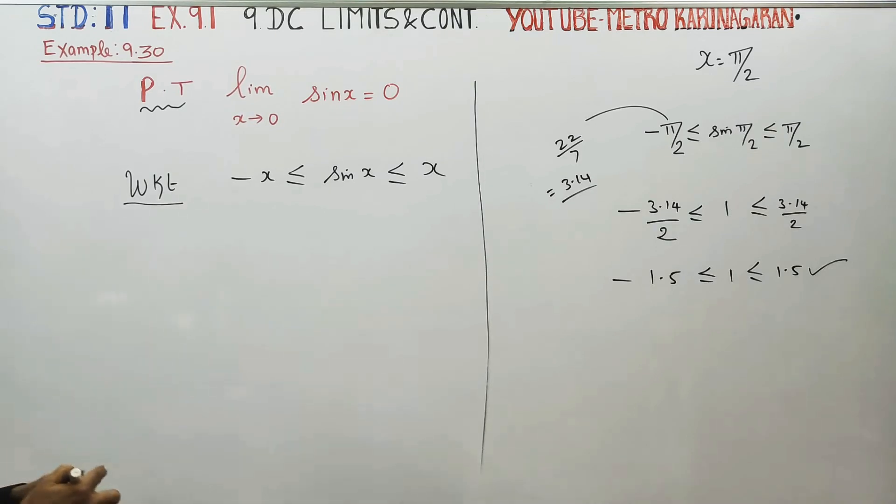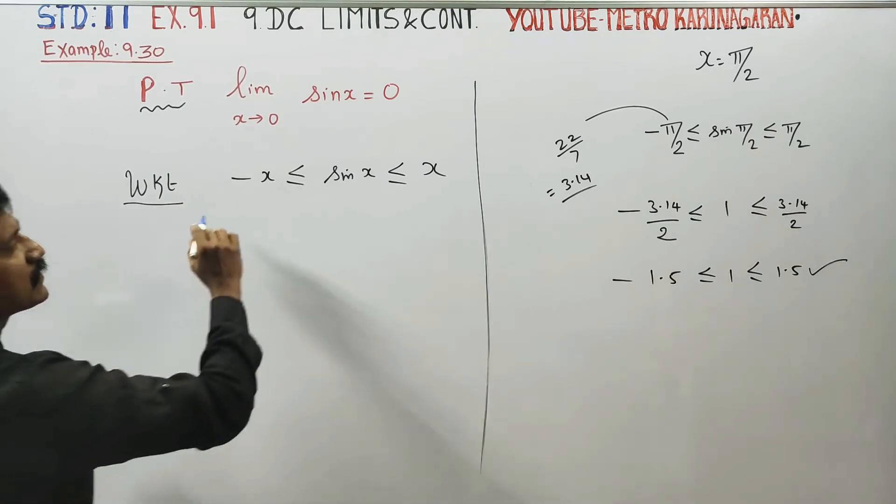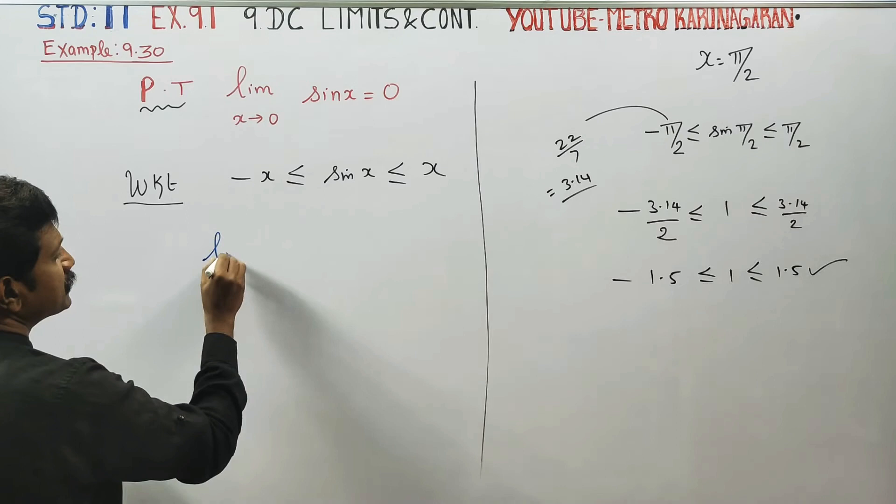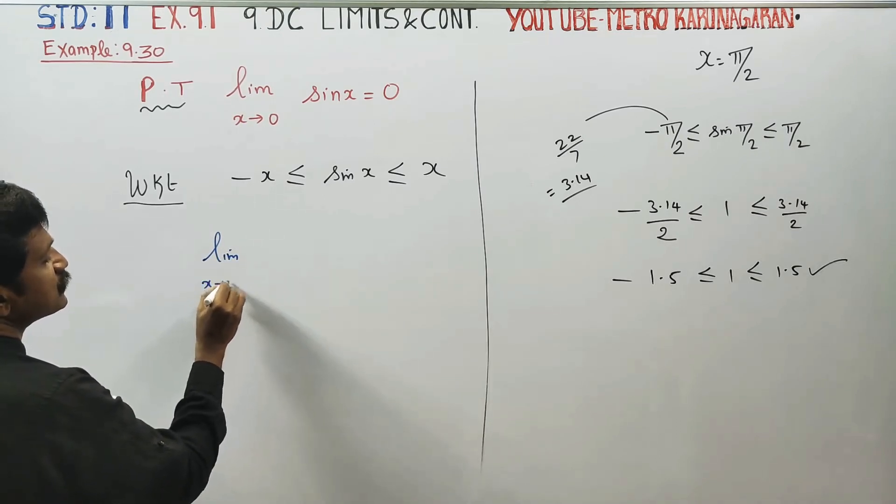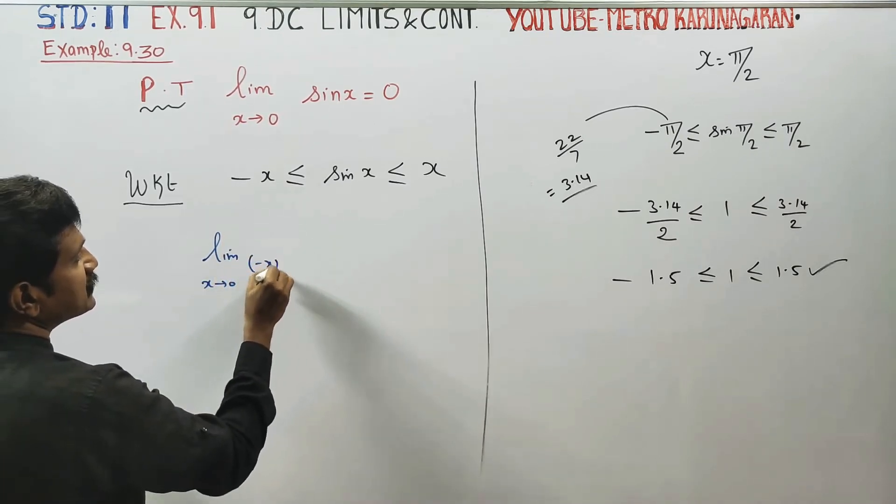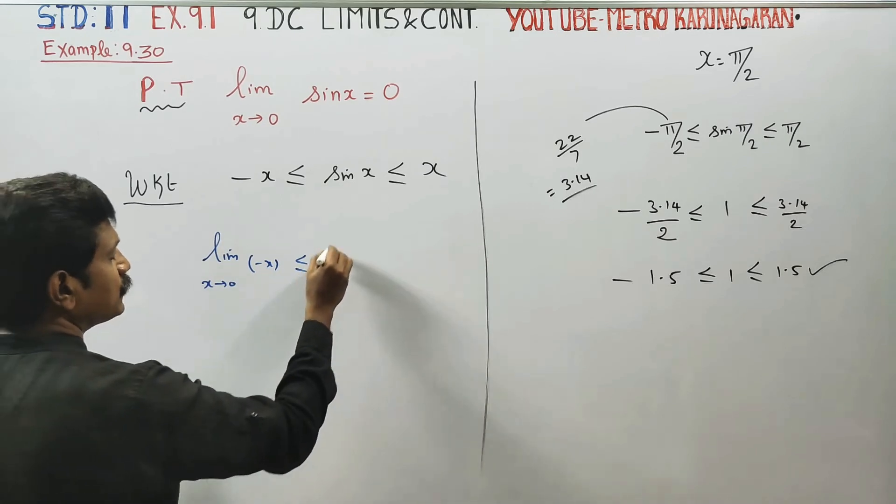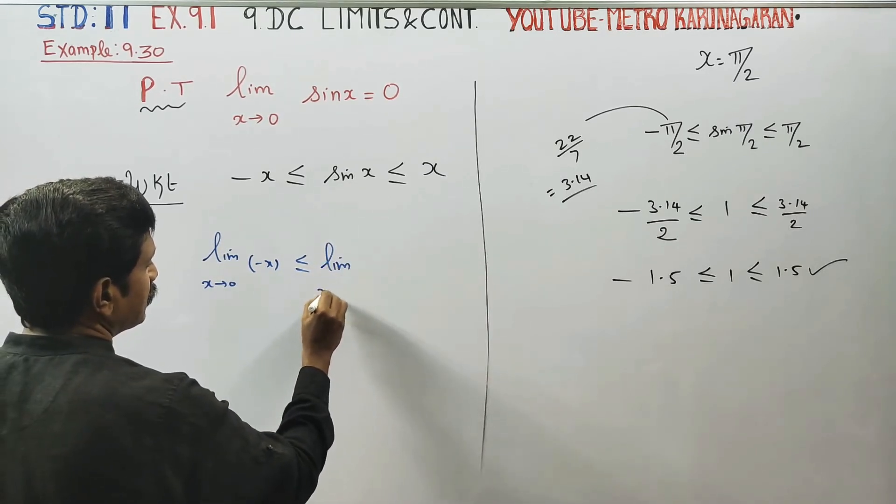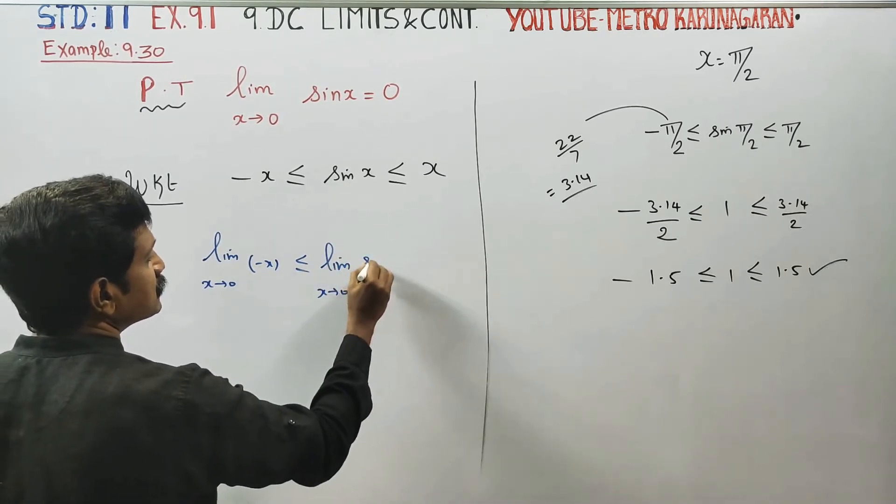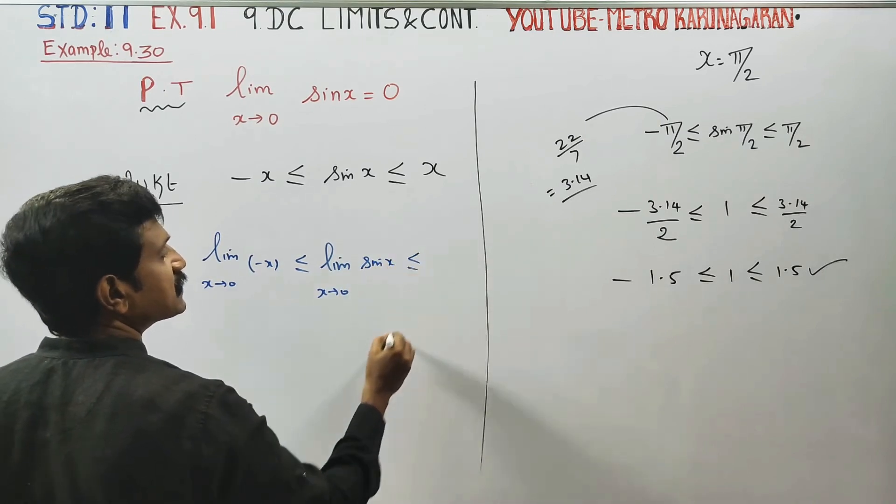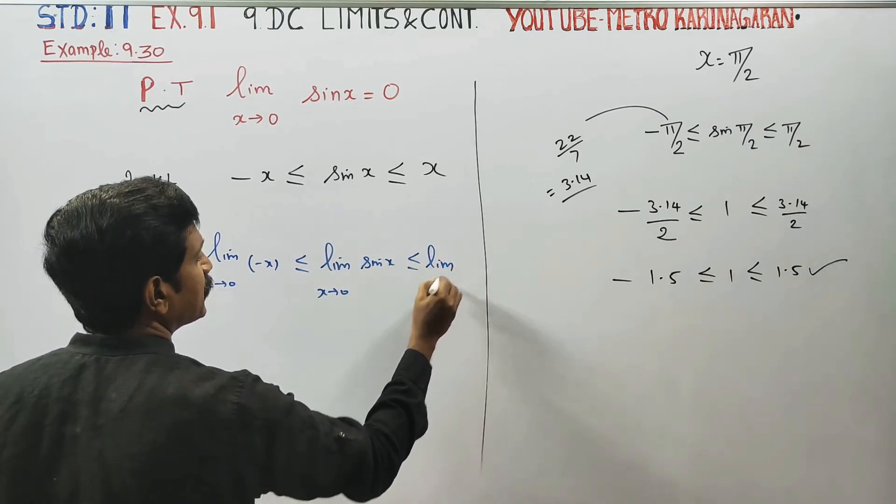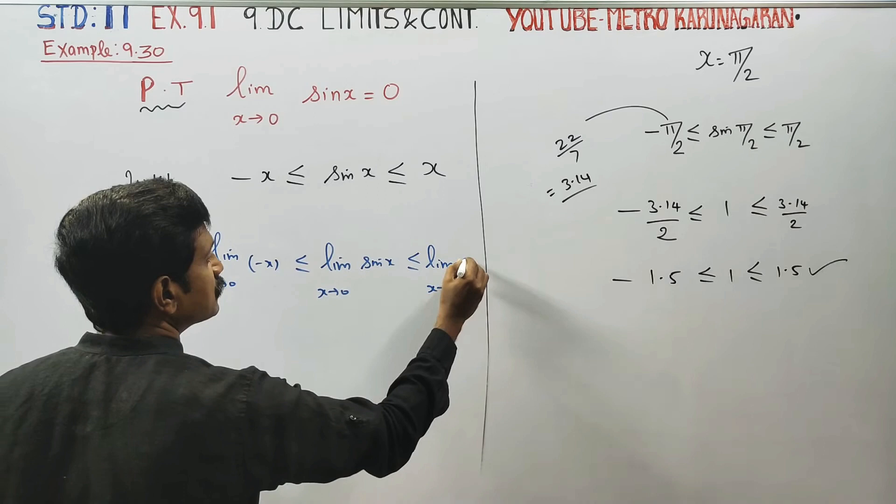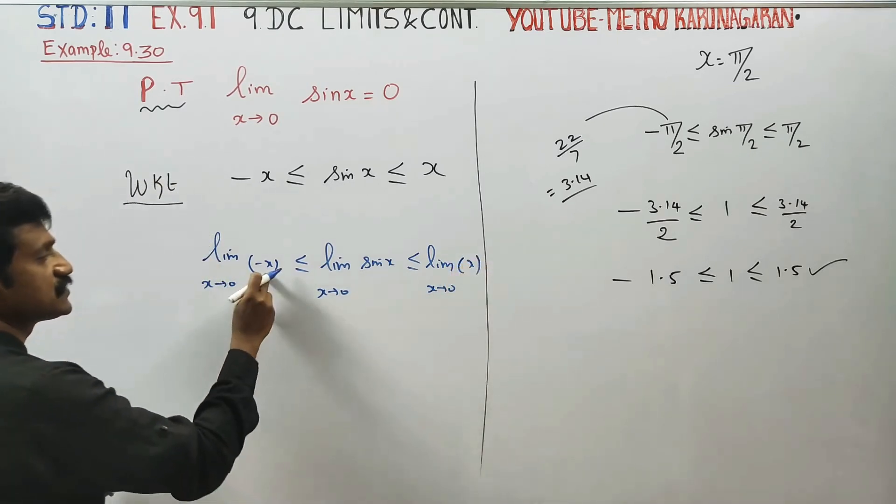Now let's start the formal proof. We write: limit as x→0 of minus x, less than or equal to limit as x→0 of sin x, less than or equal to limit as x→0 of x. When x approaches 0, we get 0 less than or equal to limit of sin x.